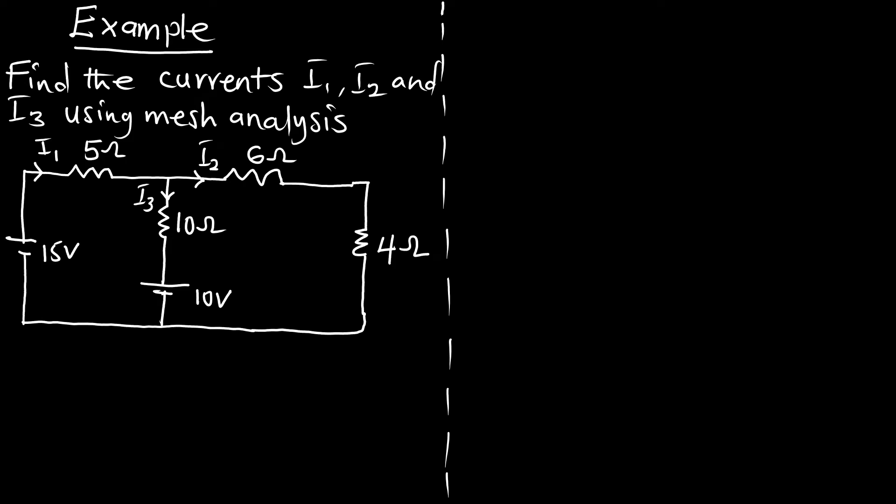Hello, welcome back to Einstein Mechanics. In today's episode we are going to show some examples on the mesh current analysis. Our example is: find the currents I1, I2, and I3 using mesh analysis.